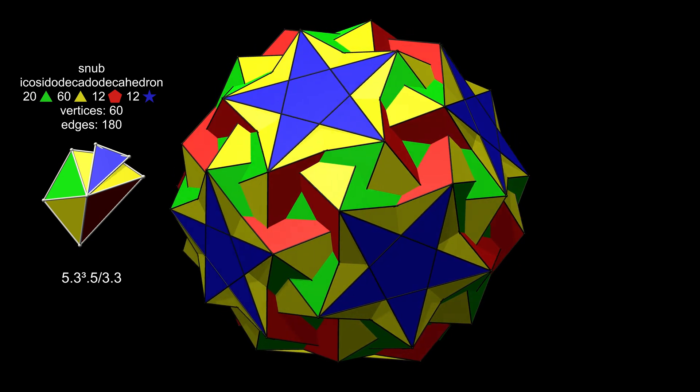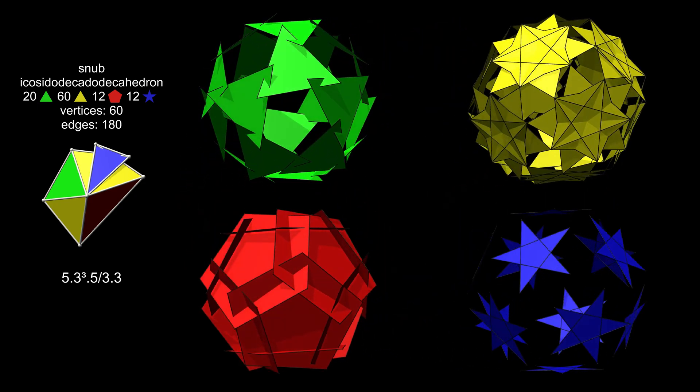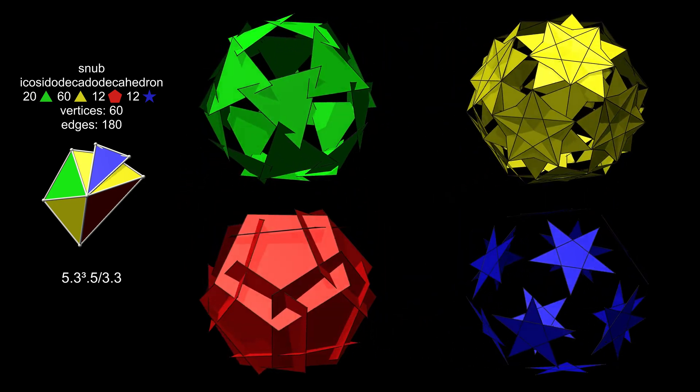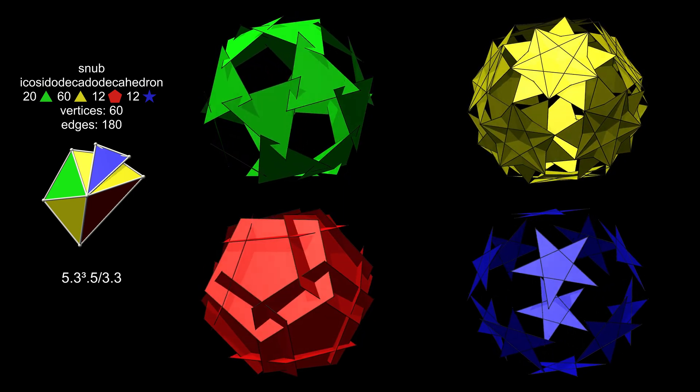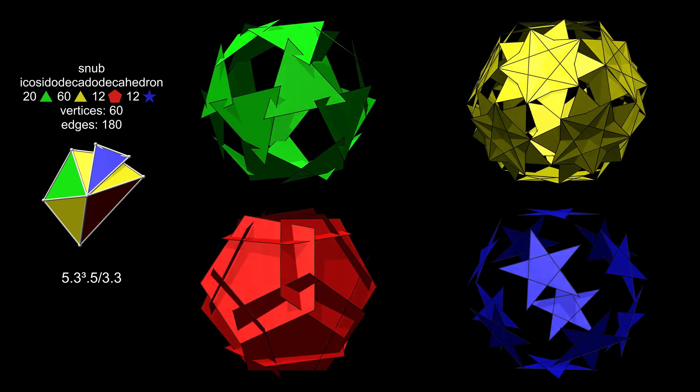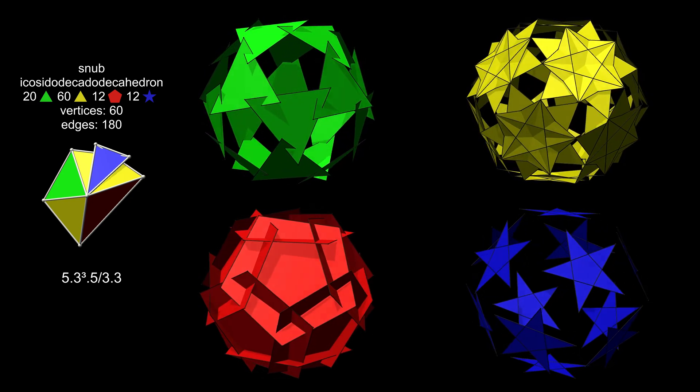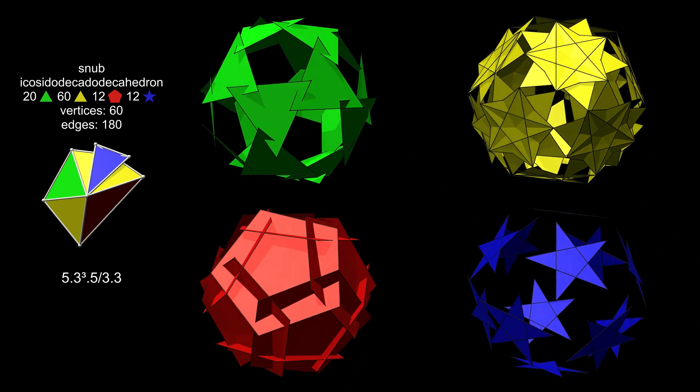To better understand the structure as a whole, we can separate out the different face types. The red pentagons look like a squashed dodecahedron, but the faces are all slightly askew. The intersections are not quite parallel to the pentagon edges. The triangles and pentagrams are also twisted slightly.